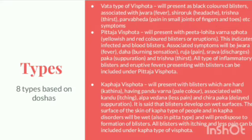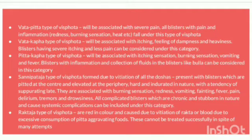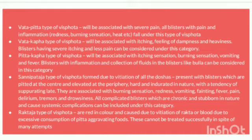There are mainly eight types of Vispota: Vata jaha, Pitta jaha, Kapha jaha, Vata-Pitta jaha, Vata-Kapha jaha, Pitta-Kapha jaha, Sannipata jaha, and Rakta jaha.